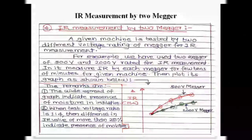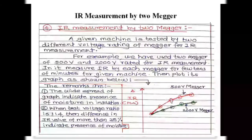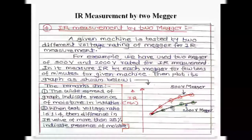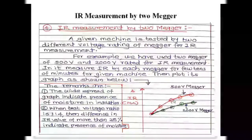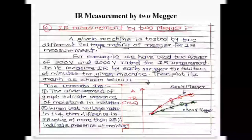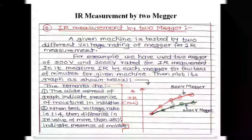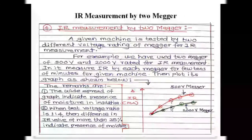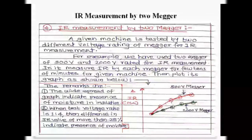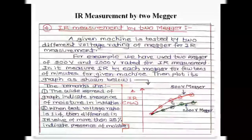The second interpretation from this graph involves comparing readings of the 500 V and 2000 V meggers at the same time duration. The voltage rating ratio of these meggers is 1:4. If the IR value from the 500 V megger reading differs by more than 25 percent from that of the 2000 V megger for the same time duration, it indicates the insulation has absorbed moisture and has solid impurities, requiring reconditioning to improve the IR value of the given electrical equipment.